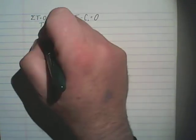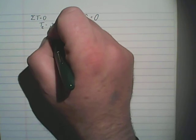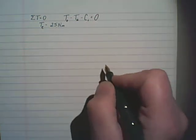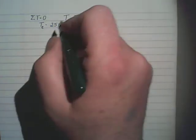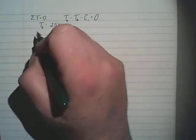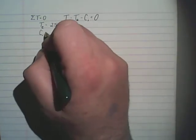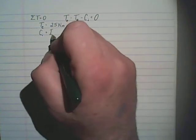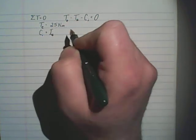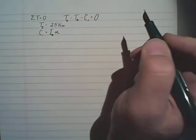We know that the motor is applying a torque of 25 newton meters to our system. The inertial component, C sub I, is equal to the mass moment of inertia of the system multiplied by the angular acceleration.